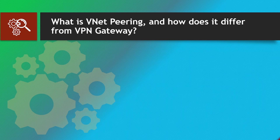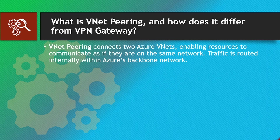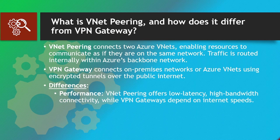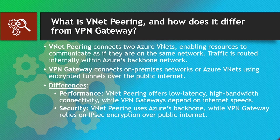Next question: What is VNet peering and how does it differ from VPN Gateway? VNet peering connects two Azure VNets, enabling resources to communicate as if they are on the same network. Traffic is routed internally within Azure's backbone network. VPN Gateway connects on-premises networks or Azure VNets using encrypted tunnels over the public internet. Differences — Performance: VNet peering offers low latency, high bandwidth connectivity, while VPN gateways depend on internet speeds. Security: VNet peering uses Azure's backbone while VPN Gateway relies on IPsec encryption over the public internet.